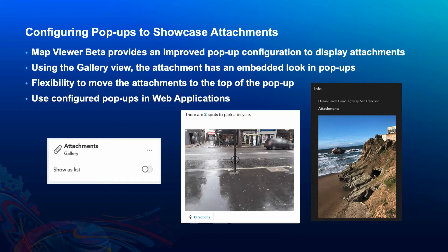In the new map viewer beta, there is the option to configure popups so that they would showcase attachments present in a feature layer. In this configuration, there is the option to display attachments as a thumbnail that would open in a separate browser tab when clicked upon, or use the gallery option to create an embedded feel for the attachment in a popup. One of the more recent nice-to-have features in the popup configuration is the ability to reorder the contents in a popup — for example, shifting the attachments above a table of attributes or custom configured text.